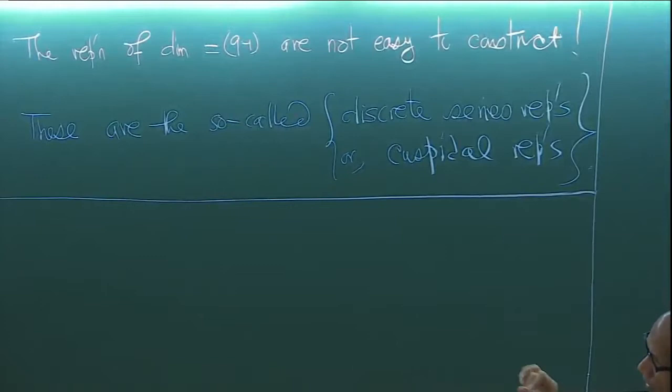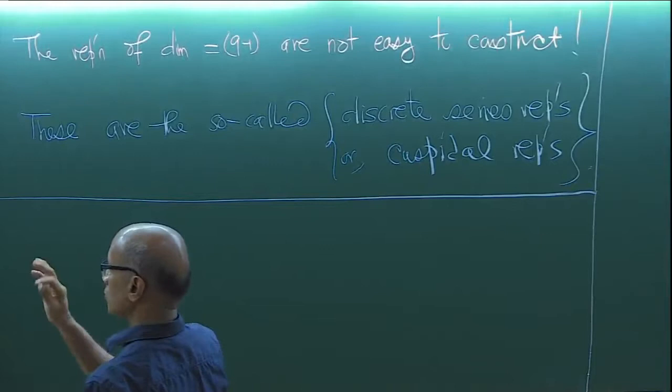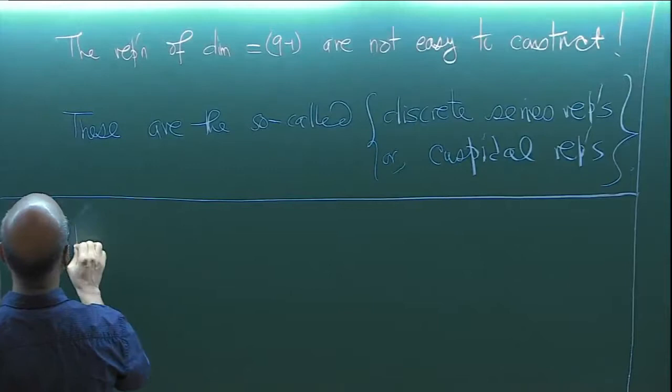Typically, if you have understood cuspidal or discrete series representations for all subgroups of a group, it allows you to understand everything. These are like atoms for the subject: everything else is built from these discrete series. The discrete series were already known to Frobenius at the turn of the last century, and by some ad-hoc process one can compute the character table. Roughly, the representation theory of GL2(Fq) consists of: trivial, Steinberg, principal series, and cuspidal representations.